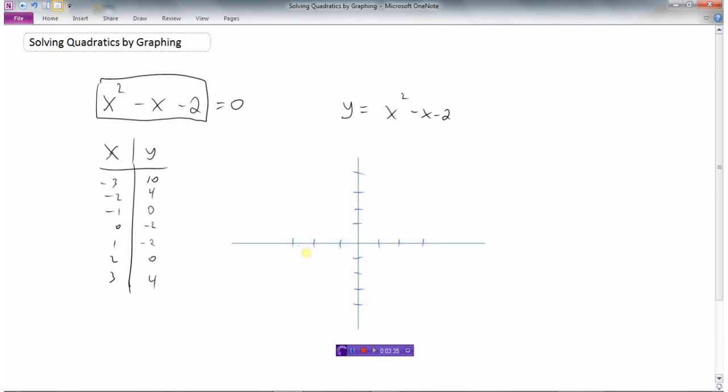So when x is negative 3, y is 10, that's off my grid here. When x is negative 2, y is 4. When x is minus 1, y is 0. When x is 0, it's minus 2. When it's 1, it's minus 2. When it's 2, it's 0. And when it's 3, it's 4. And then we could connect the dots here.